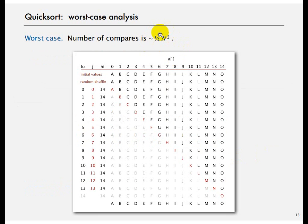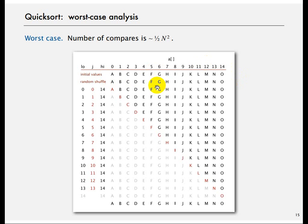The worst case number of compares is order N squared. This is important because merge sort was always N log N, whereas Quicksort's worst case is order N squared. This happens when the input array is completely sorted.